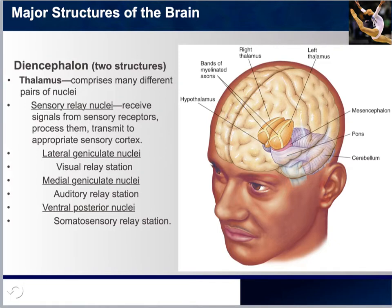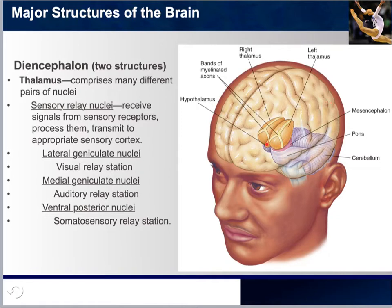Working our way to the top, we've reached the diencephalon, which is made up of two structures: the thalamus and the hypothalamus. The thalamus is comprised of many different pairs of nuclei, primarily known for their sensory relay purposes. The thalamus sorts messages received from our organs and nerves and sends them to corresponding areas of the cerebral cortex.